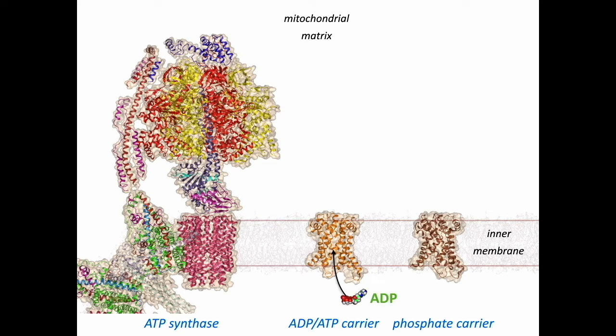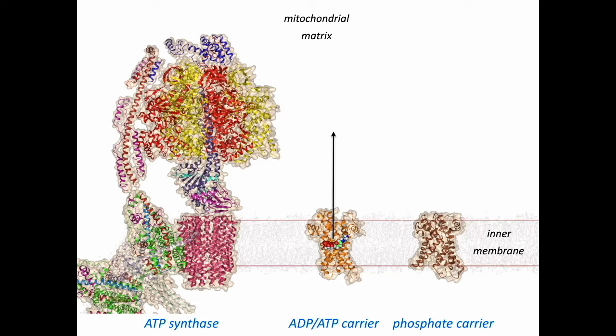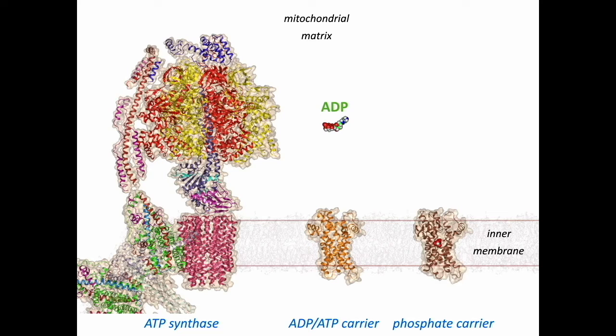The process of ATP synthesis starts when the spent fuel, ADP, coming from the rest of the cell binds to the ADP-ATP carrier, which then changes conformation and transports ADP into the mitochondrial matrix. Similarly, phosphate binds to the phosphate carrier, which then changes conformation and transports phosphate to the matrix.